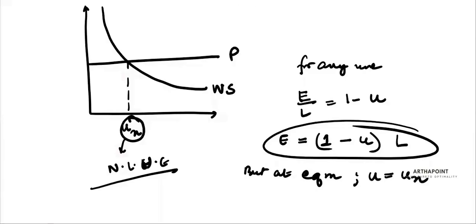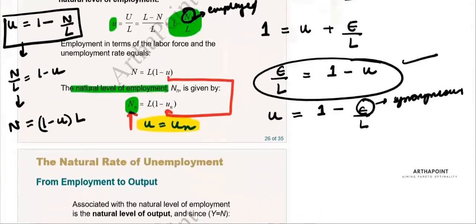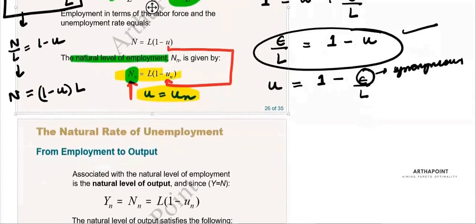At equilibrium, unemployment rate u is replaced with u_n. So when I substitute the equilibrium value, I get the corresponding equilibrium employment value, which is called the natural level of employment. When unemployment is at its natural rate, employment is also at equilibrium.